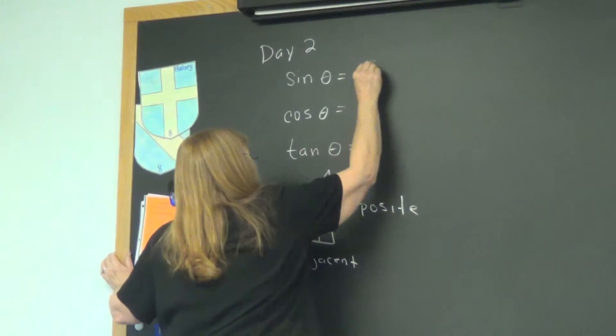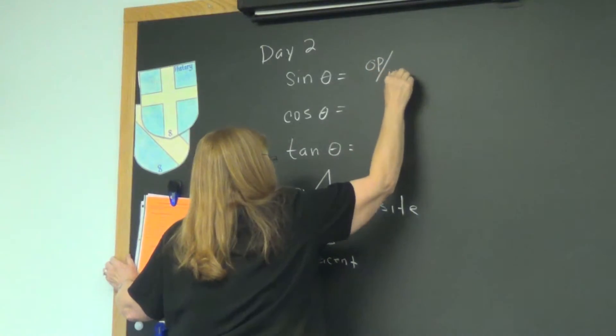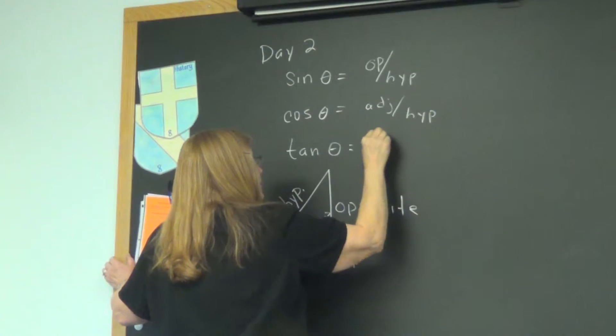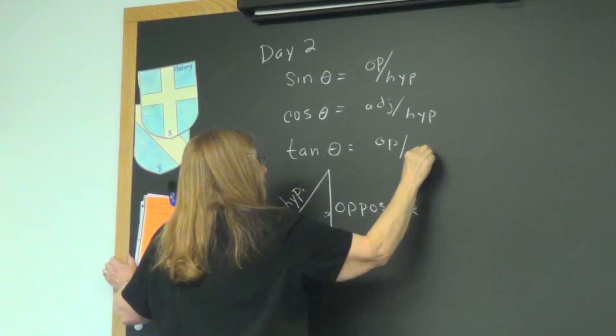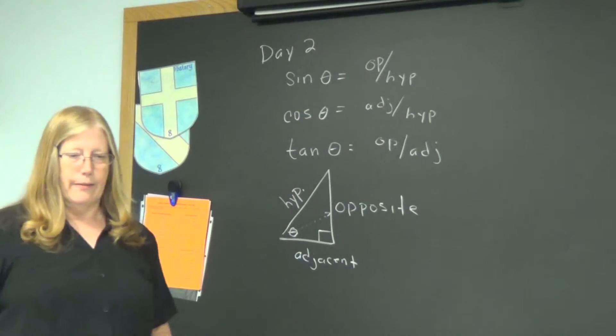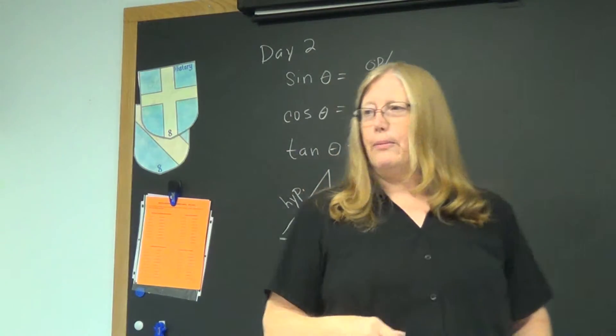Sine is opposite over hypotenuse. And cosine? Adjacent over hypotenuse. And tangent? Opposite over adjacent. So, make sure that's down on your notes as a way of reminder.